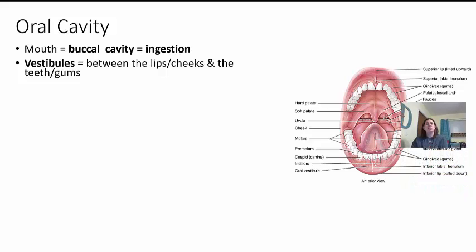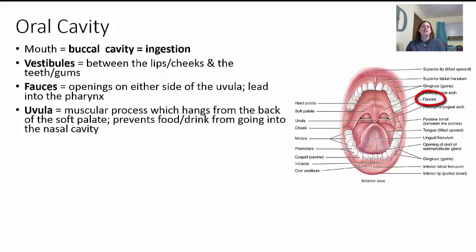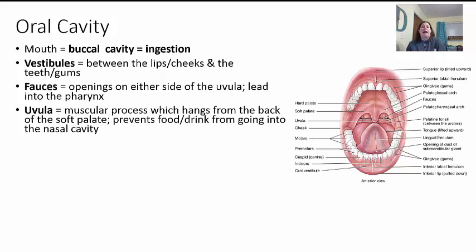Now we're going to start from the mouth and move our way down, looking at anatomy and then physiology of each structure. The oral cavity — that's the mouth or buccal cavity — is used for ingestion. When you open your mouth between your lips, cheeks, teeth, and gums, it's called the vestibule. The uvula is that muscular process that dangles in the back when you go 'ah.' It's connected to your soft palate so that when you swallow, it moves up to block your nasal cavity so food and drink don't go up into your nose — though this doesn't work 100% of the time, as anyone who's laughed while eating knows.